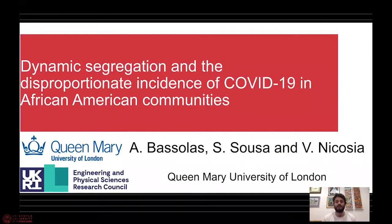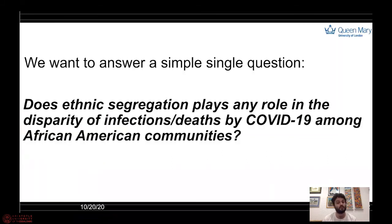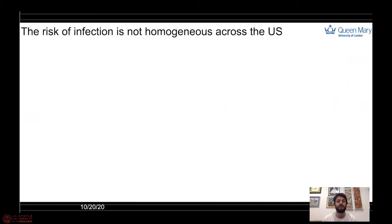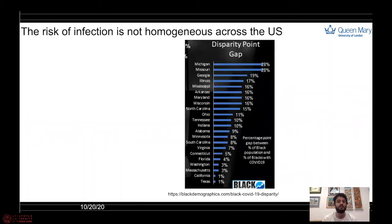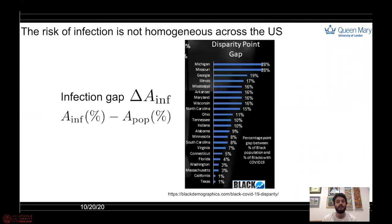My name is Alex Basolas, and today I will be presenting the work 'Dynamic Segregation and the Disproportionate Incidence of COVID-19 in African-American Communities,' done in collaboration with Sandra Sosa and Vincenzo Nicosia at Queen Mary University of London. The main objective is to answer a rather simple question: whether the ethnic segregation suffered by African-Americans plays any role in their overrepresentation among the infected and deceased by COVID-19. We will focus on the infection gap in several US states, which is obtained by the difference between the percentage of African-Americans among the infected and their percentage in the overall population. The higher this value, the more hit by the pandemic are African-American communities, as is the case for Michigan or Missouri.